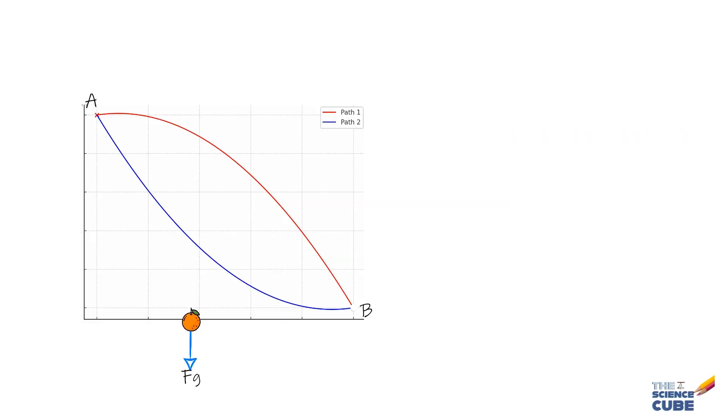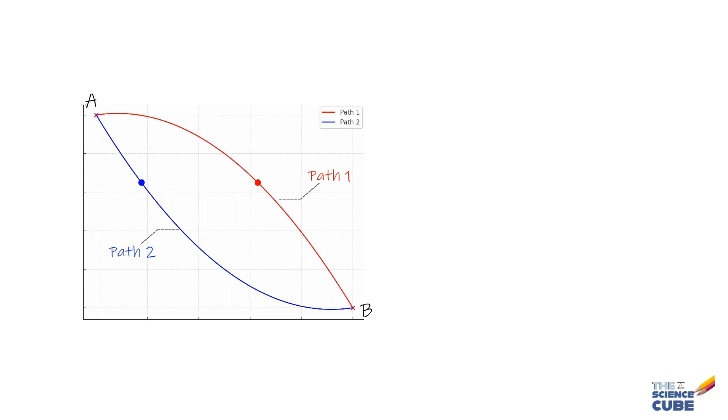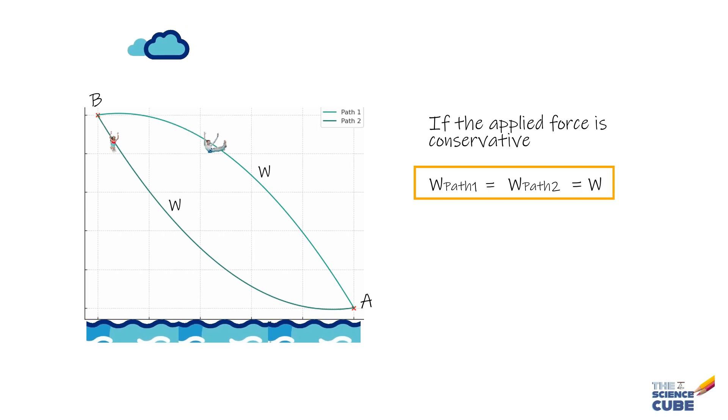The other important thing to remember is that the work done by a conservative force on an object moving between two points does not depend on the path taken by the particle. So, you can apply a conservative force F and move a particle from point A to point B taking these two different paths, the work done would be the same. As an example, if these two slide down this water slide from point B to point A taking different paths, then work done by the force of gravity would be the same for both the paths.